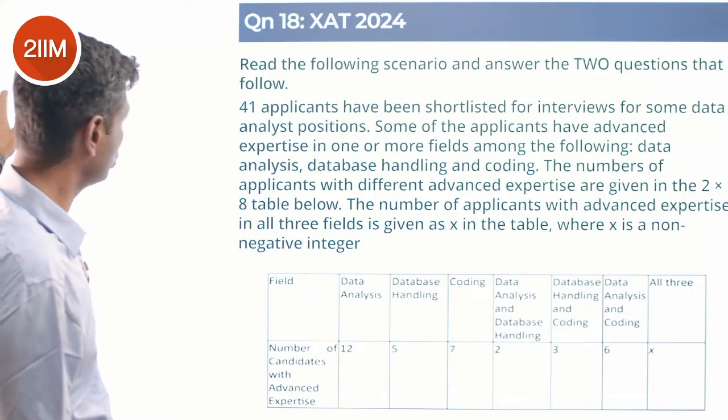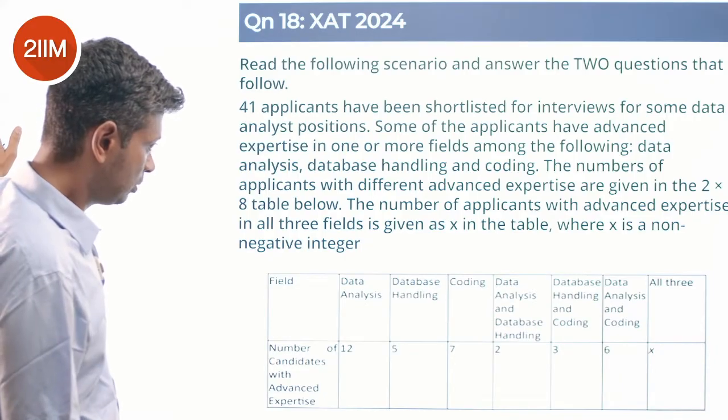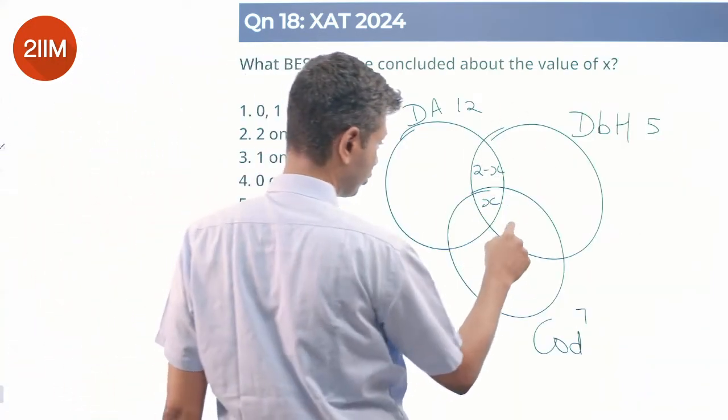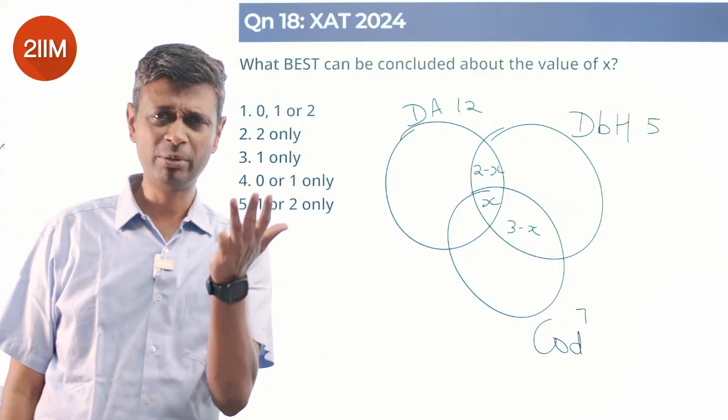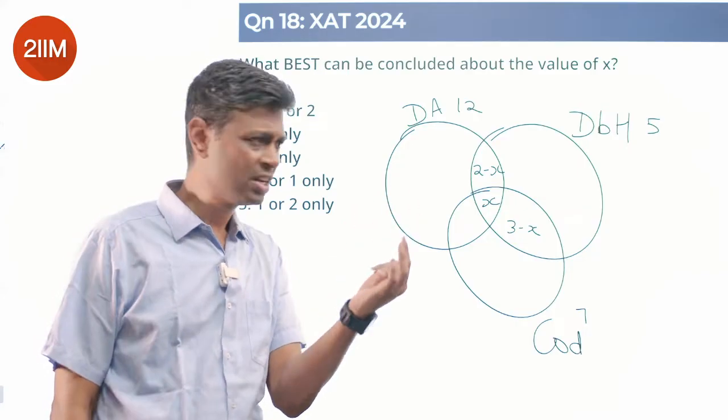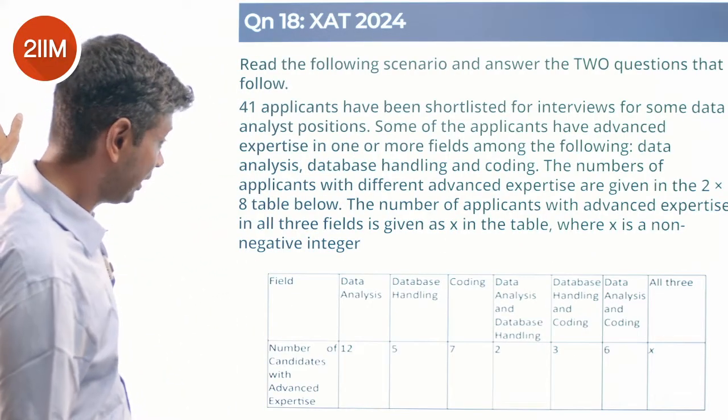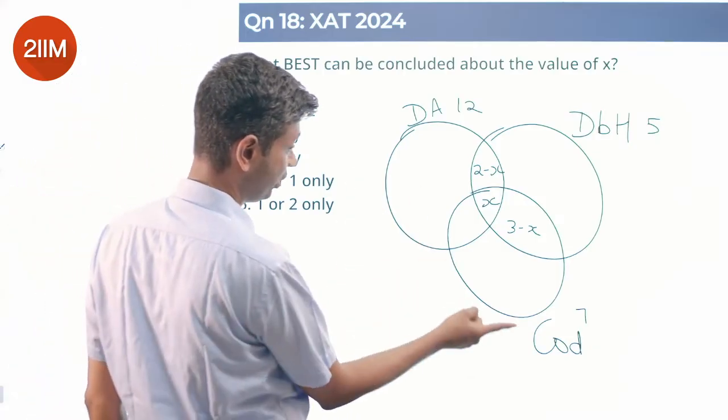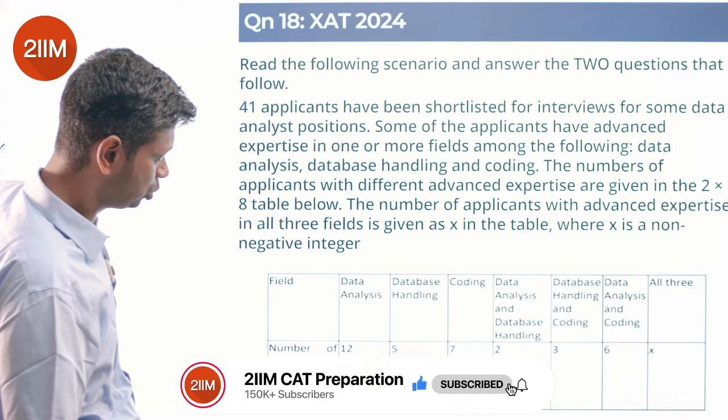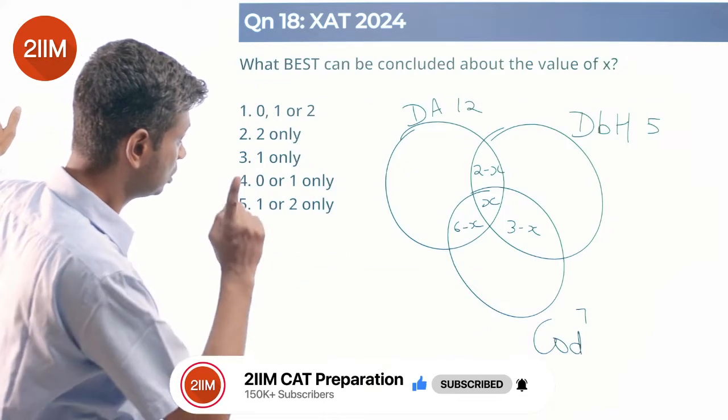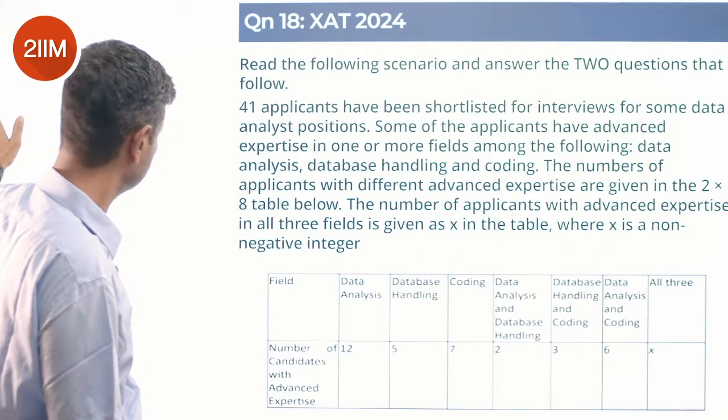All three is X. Data analysis and database handling and coding is 3, so this is 3 minus X. The whole thing is 3, so this is 3 minus X. I can use that formula A union B union C, but I like doing this because I can stick everything with one missing number, right? X. Do the other one. Data analysis and coding is 6, so this is 6 minus X.